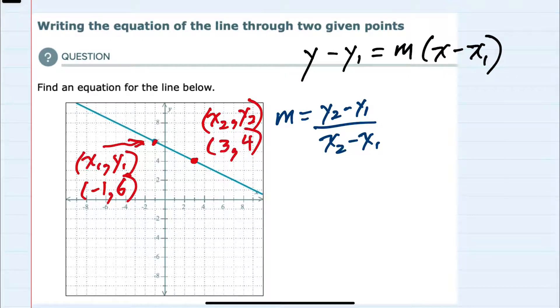So substituting into our slope equation, we would have y2, which is 4, minus y1, which is 6, over x2, which is 3, minus x1, which is a minus 1. So we've got minus a negative 1, so plus 1.